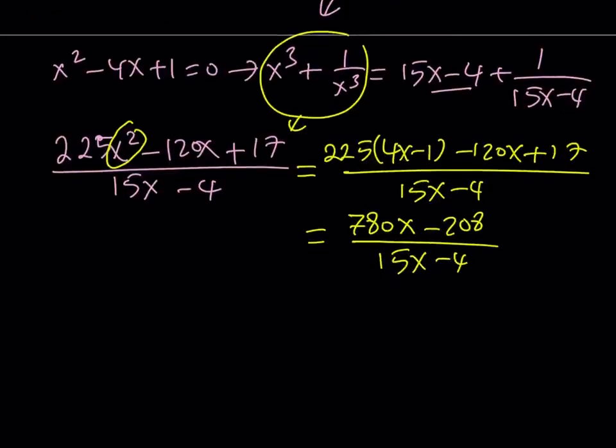And if you look at 780 and 208, that's actually both of them are divisible by 52. And this is actually 52 times 15. And this is 52 times 4. So if you take out a 52, you're going to get 52 times 15x minus 4 divided by itself.